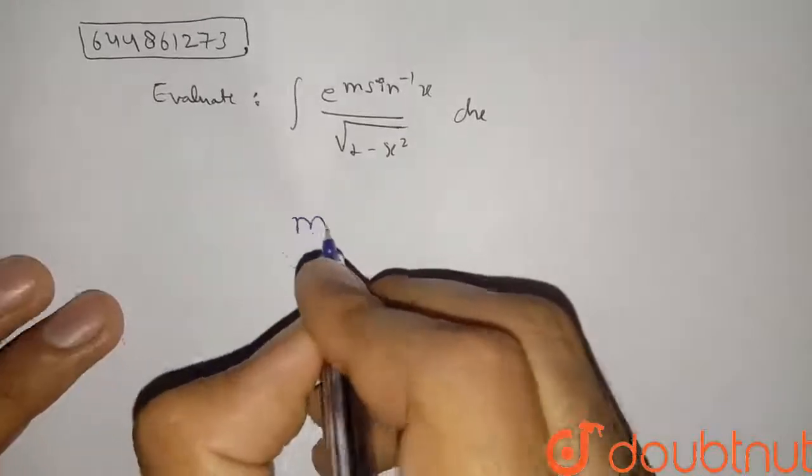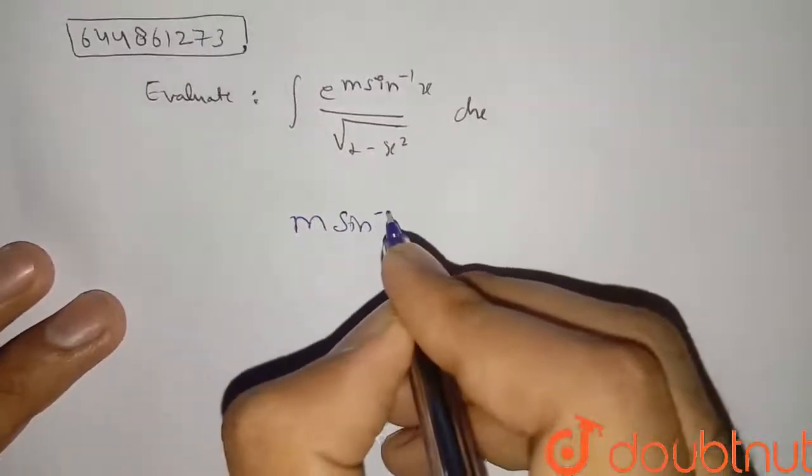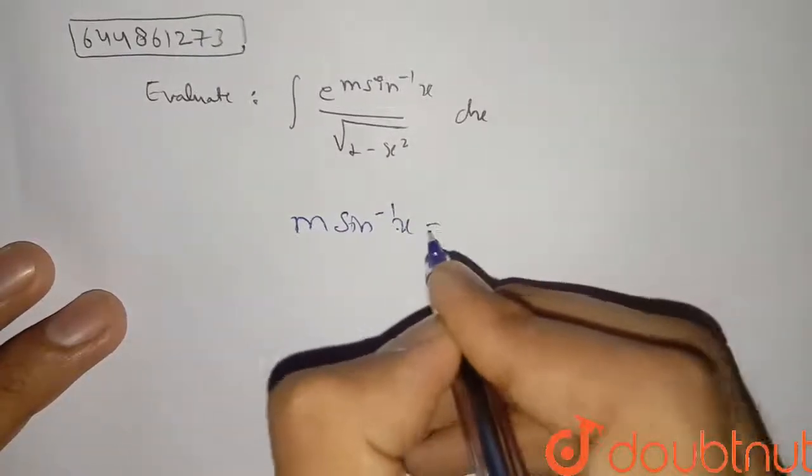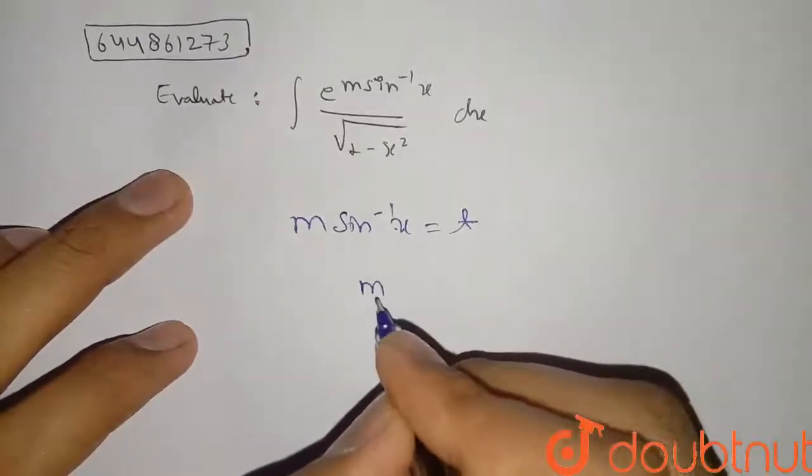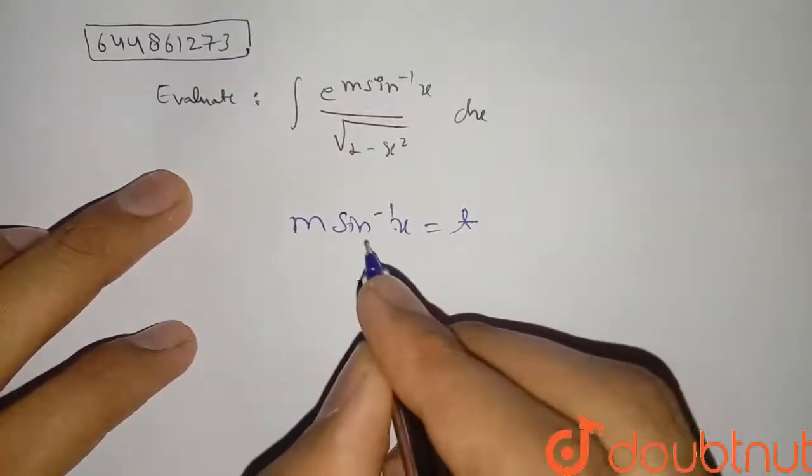So let's see what I am saying. If I put m into sine inverse x is equal to t, then if I derivative both sides, then it will be m is constant and derivative of sine inverse x will be one upon root one minus x square into dx is equal to dt.